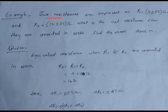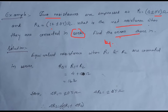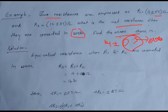Now we solve an example. Two resistances are expressed as R1 equals 4 plus-minus 0.5 ohm and R2 equals 12.5 plus-minus 0.5 ohm. What is the net resistance when connected in series, and find the error? When data is given as 4 plus-minus something, the plus-minus 0.5 ohm is the error. When two resistances are connected in series, the equivalent resistance is Rs equals R1 plus R2. The main value of R1 is 4 and R2 is 12.5, so Rs equals 4 plus 12.5 equals 16.5 ohm.